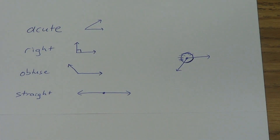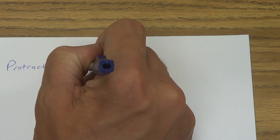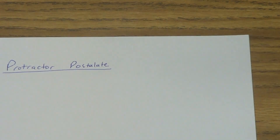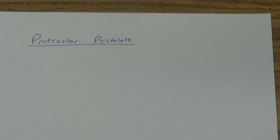So just understand that we're not going to go over 180 degrees in geometry class. Those are your four types of angles: acute, right, obtuse, and straight. Now we have two postulates. The protractor postulate — remember the ruler postulate? It was kind of long in the book. The protractor postulate works the same way. I'm going to read it to you — don't copy it all down, I'll shorten it up.